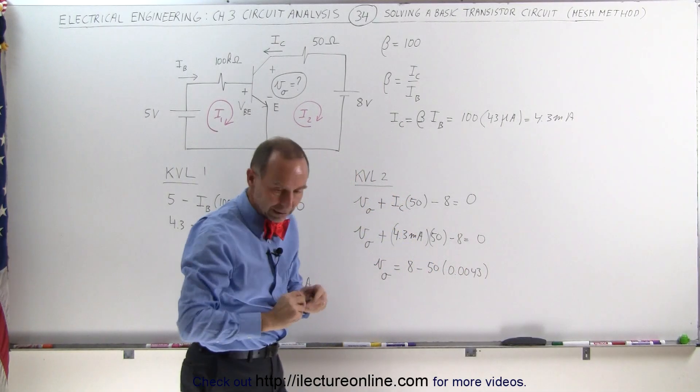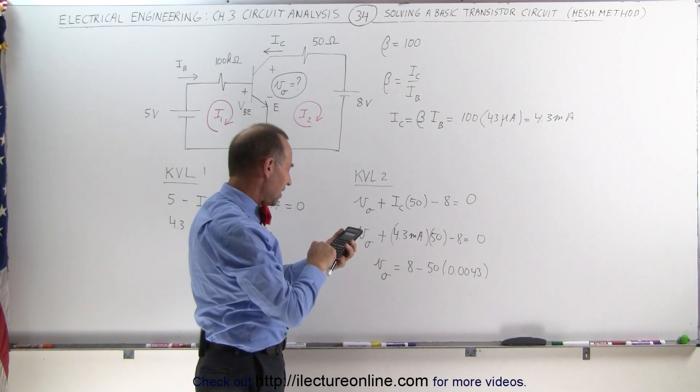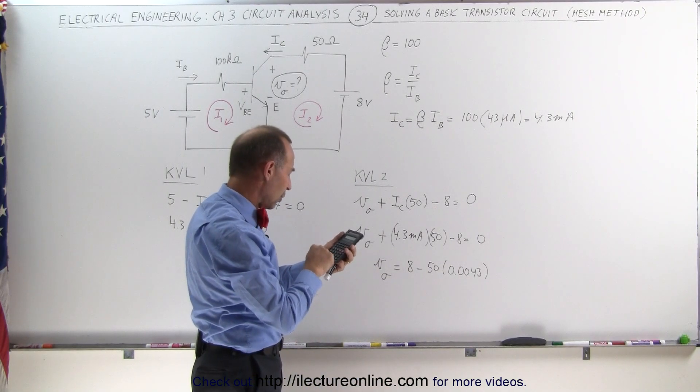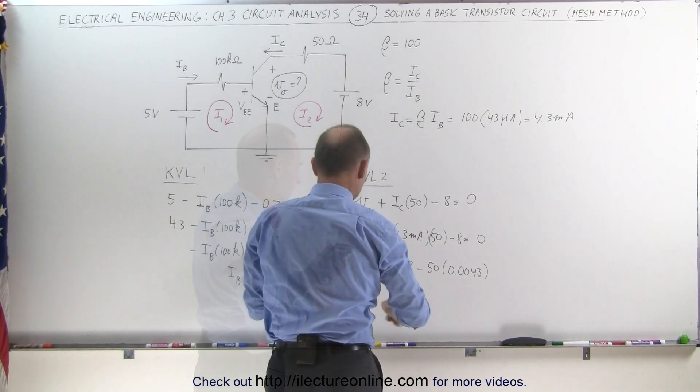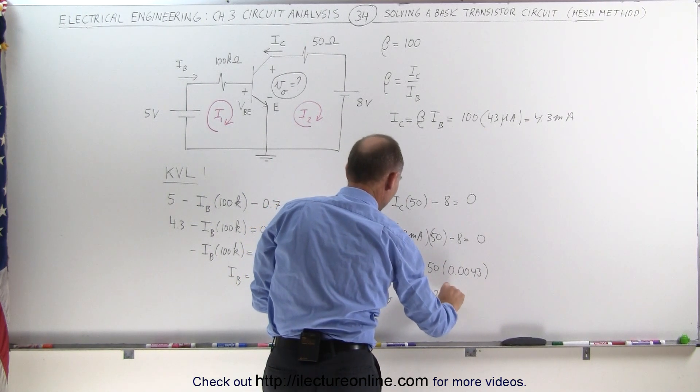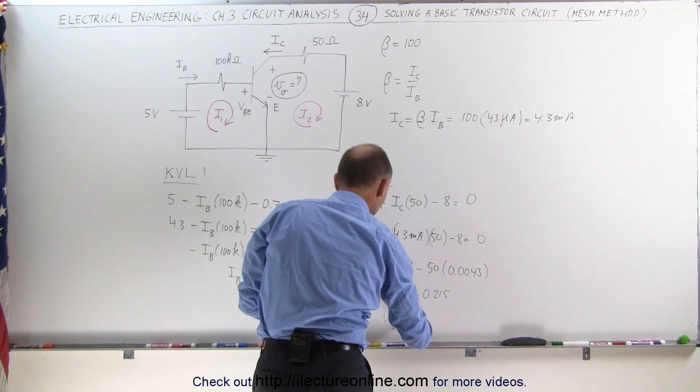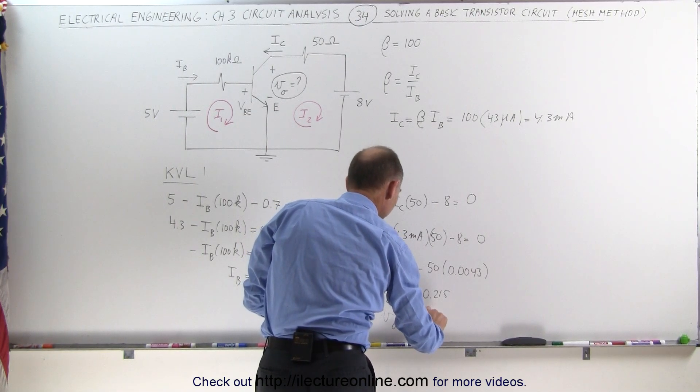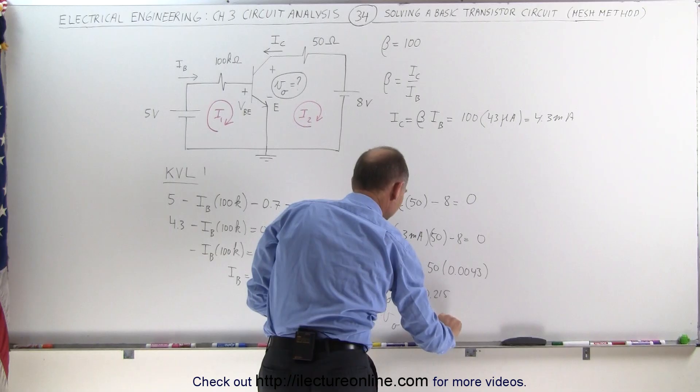And now we need a calculator for that. So 50 times 0.0043 is equal to, V sub O is equal to 8 minus 0.215, or V sub O is equal to 7.785 volts.